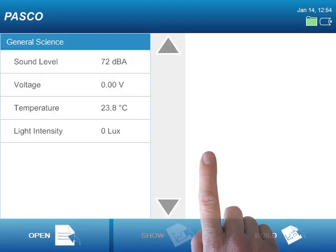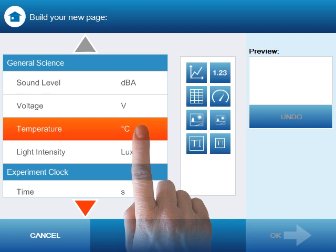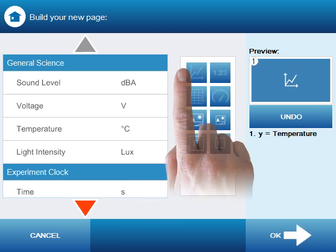And look at one final way we can use the spark science learning system, by constructing and building our own investigation. If I select build, I'm given the opportunity to design my own spark lab page by selecting measurements and the displays in which I'd like to see those measurements.